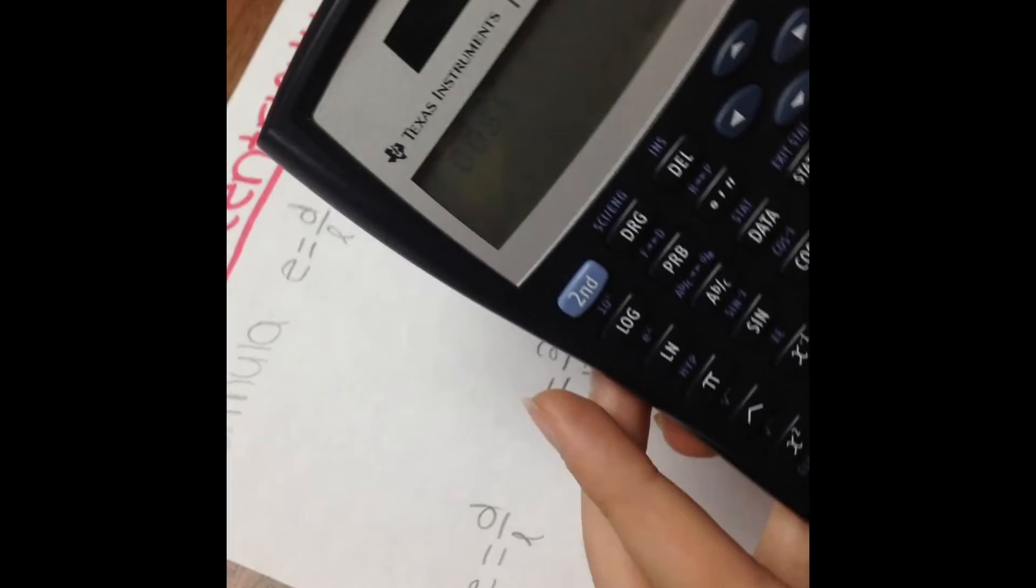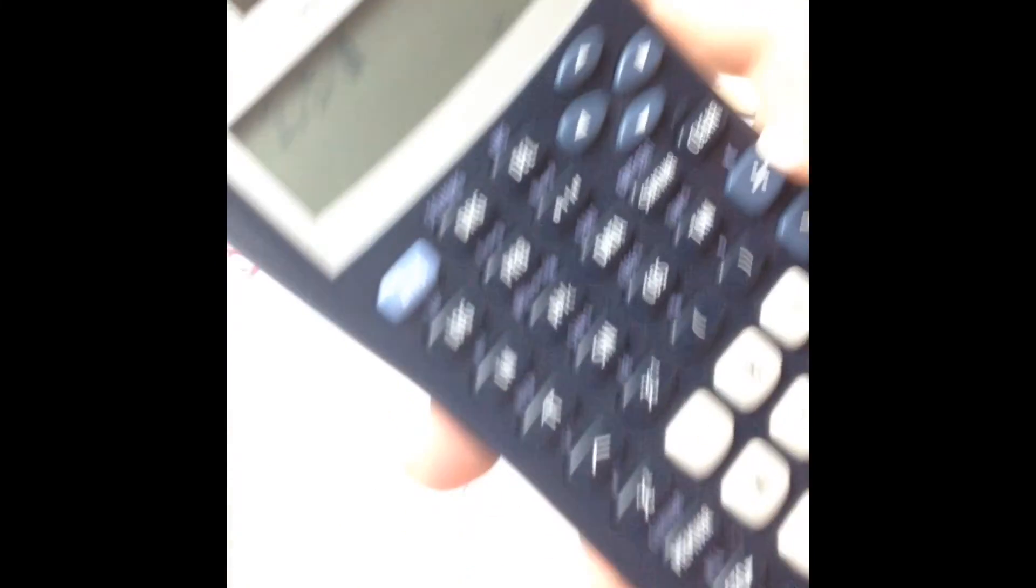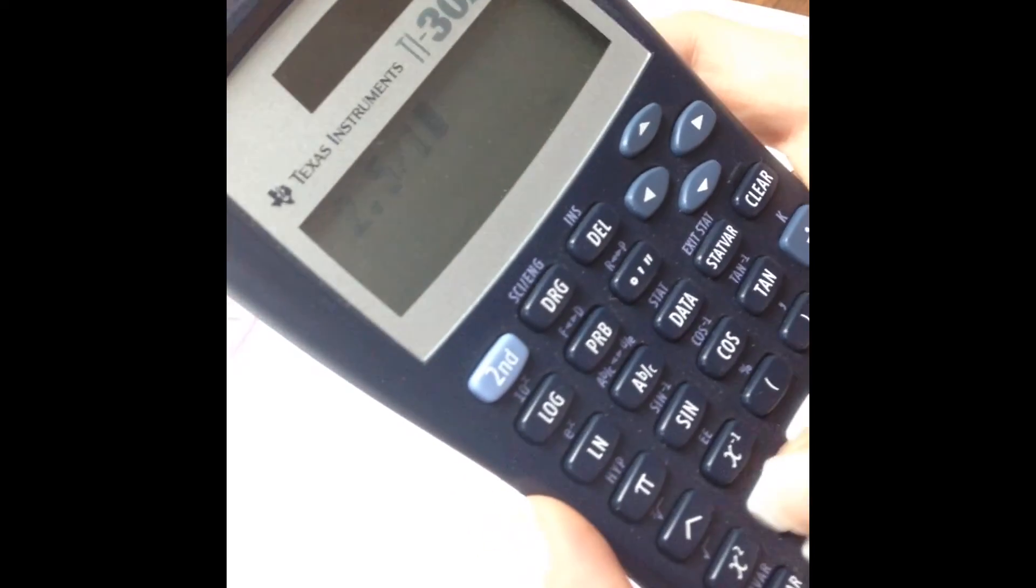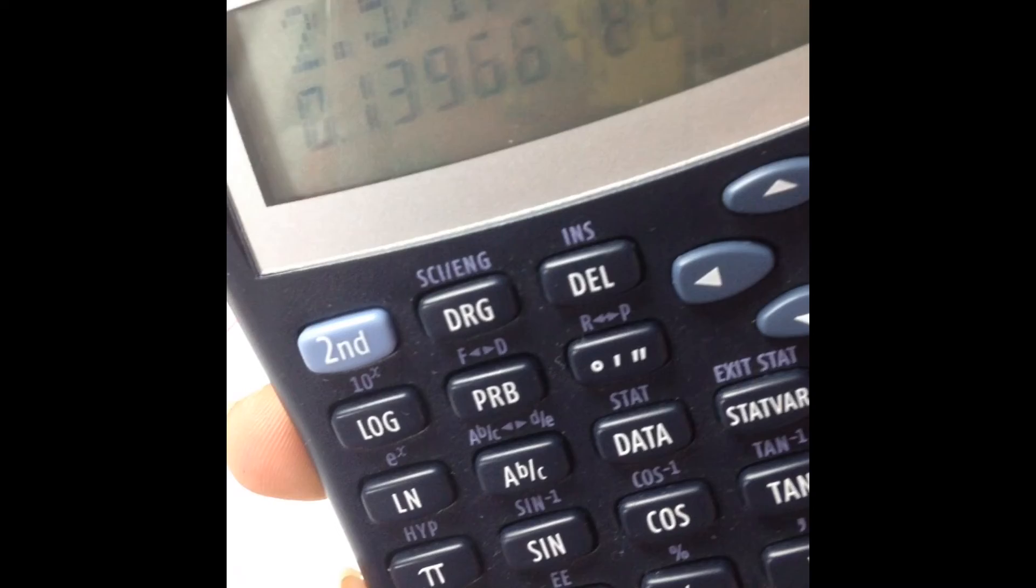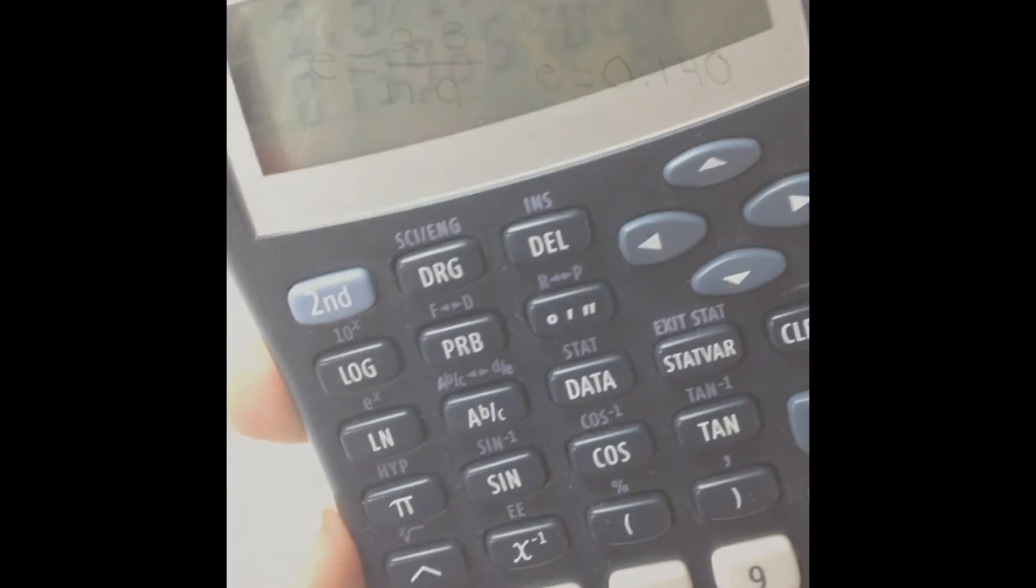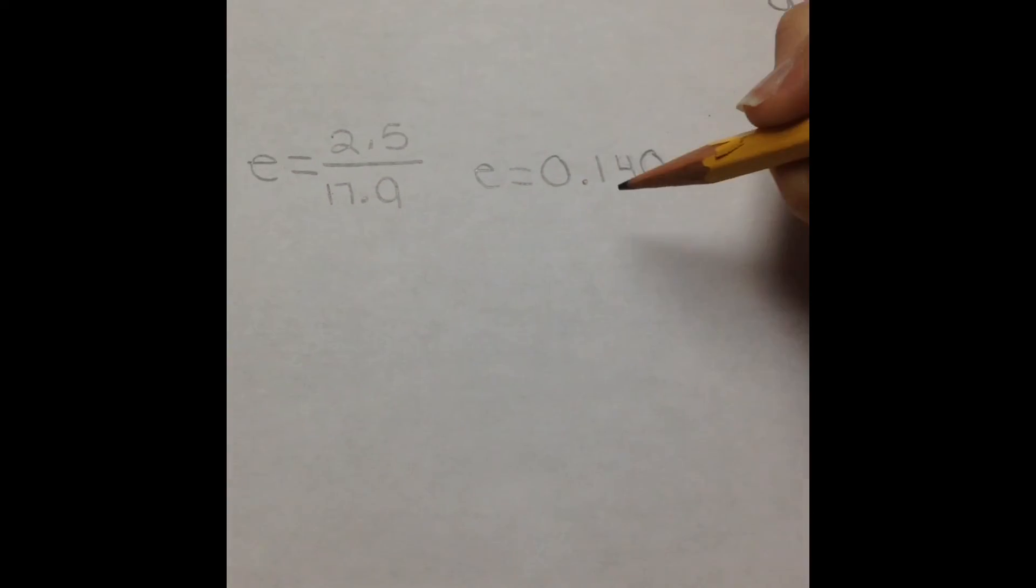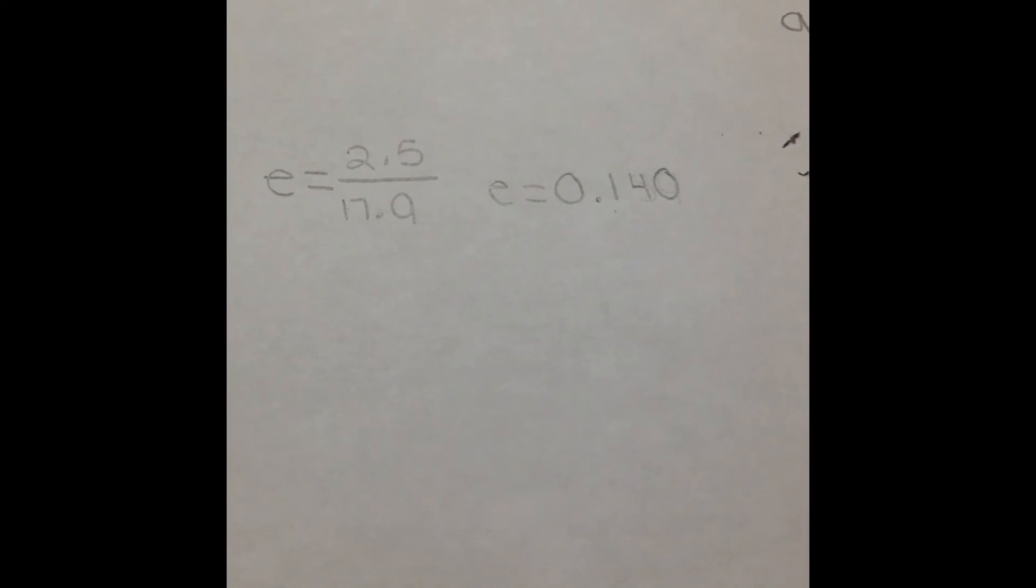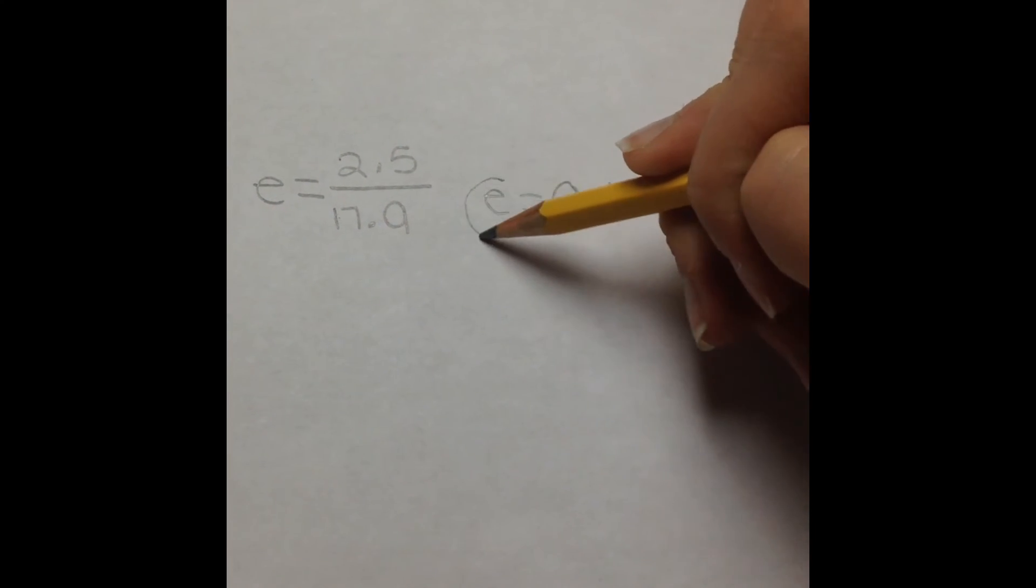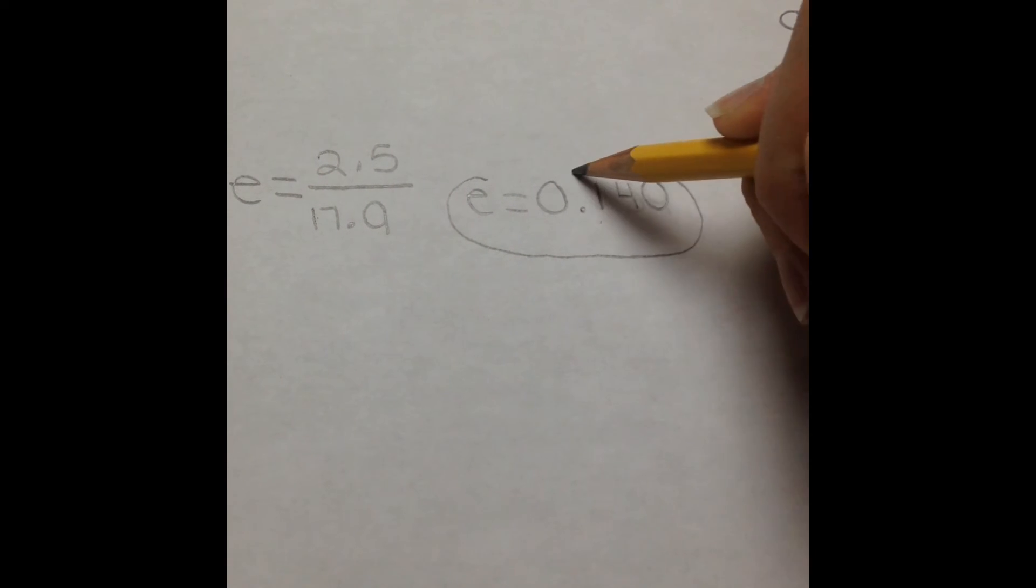Now I am going to take my calculator and divide the 2.5 by the 17.9. Now look at that number. No one wants to write that huge number. So what we are going to do is round to the nearest thousandths place. This will give us the eccentricity value of 0.140 for our ellipse.